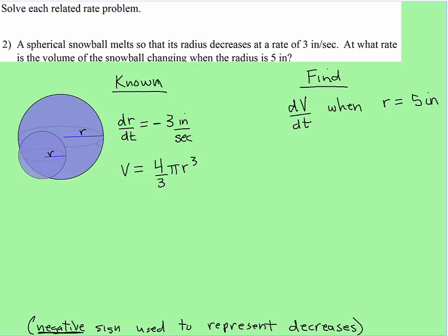So I drew the diagram, snowball in this case is purple, larger than shrinking. I state what is known. We know that the rate that the snowball is shrinking is at 3 inches per second and I gave it a negative sign to indicate decreasing.